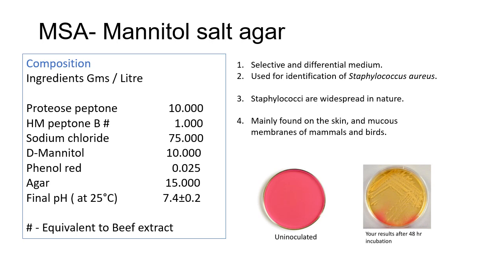MSA is a selective and differential medium used for the identification of Staphylococcus aureus. Staphylococci are widespread in nature and are mainly found on skin, mucus membranes of mammals and birds. There are various species but MSA can be used to isolate them.